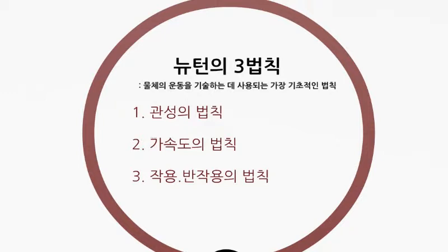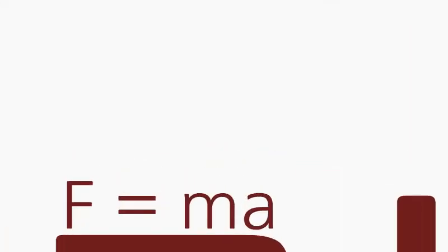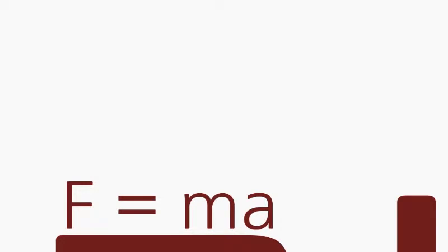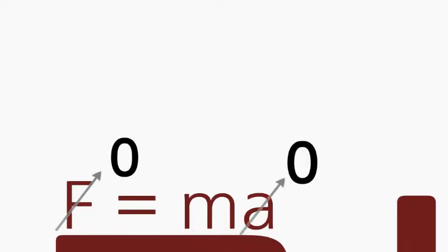가장 먼저 눈에 친숙한 가속도의 법칙을 볼까요? 가속도의 법칙은 F=ma라는 식인데요. 힘에 따라서 일정한 질량을 가진 물체의 가속도가 바뀌는 것입니다. 여기서 만약 힘이 0이라면 어떻게 될까요? 질량은 0이 아니기 때문에 가속도가 0이 되겠죠?